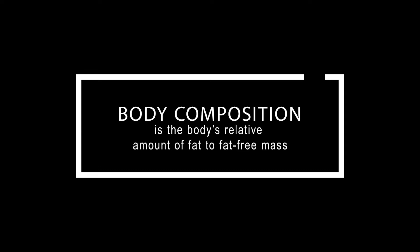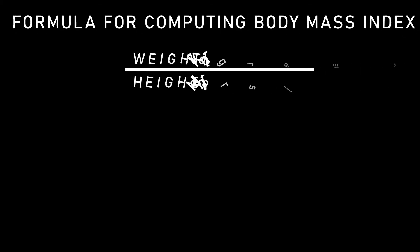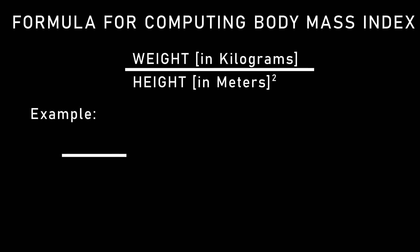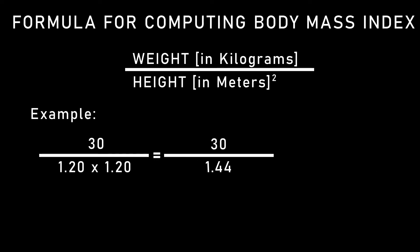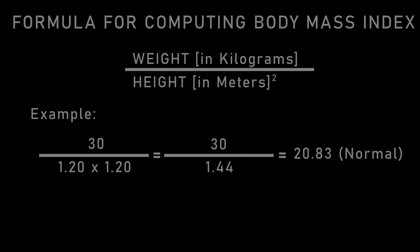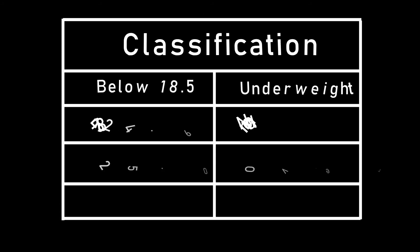We have health-related fitness under physical fitness tests. Body composition is the body's relative amount of fat to fat-free mass, or the body mass index BMI. There is a formula for computing body mass index: weight in kilograms over height in meters squared. Example: 30 over 1.20 squared equals 30 over 1.44 equals 20.83, considered to be normal.